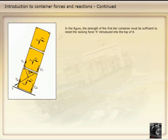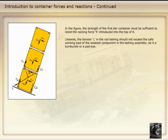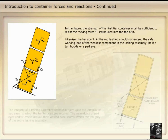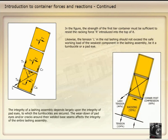The strength of the first-tier container must be sufficient to resist the racking force R introduced into the top of it. Likewise, the tension L in the rod lashing should not exceed the safe working load of the weakest component in the lashing assembly, be it a turnbuckle or a pad eye. The integrity of a lashing assembly depends largely upon the integrity of pad eyes to which the turnbuckles are secured. The wear-down of pad eyes and/or cracks around their welded base seams affects the integrity of the entire lashing assembly.